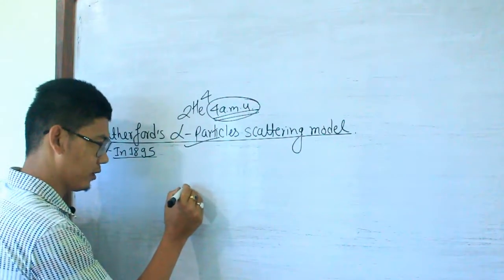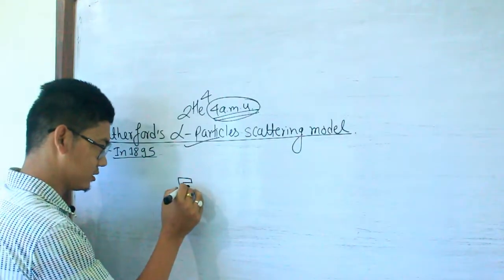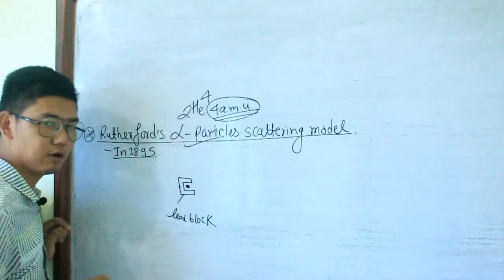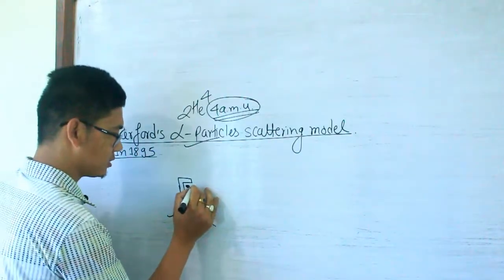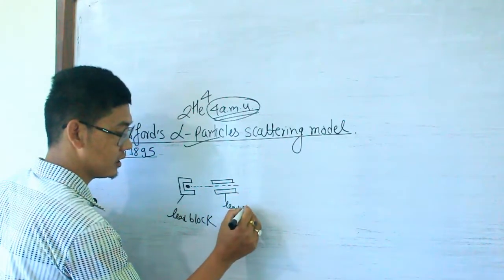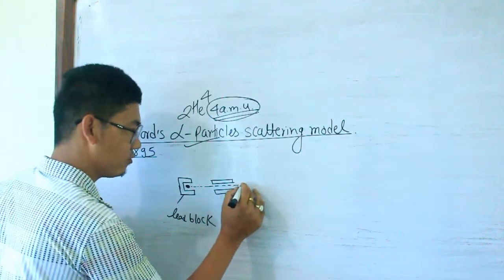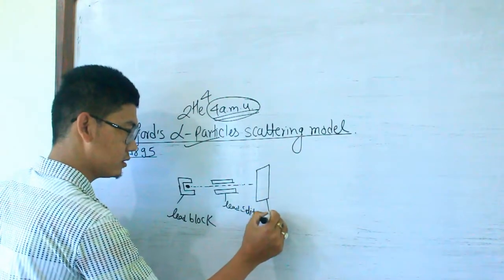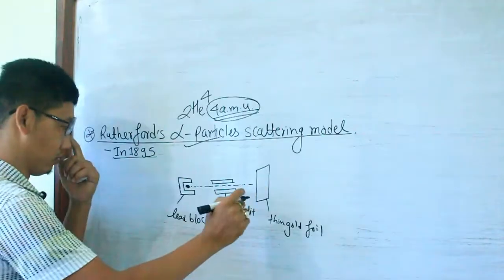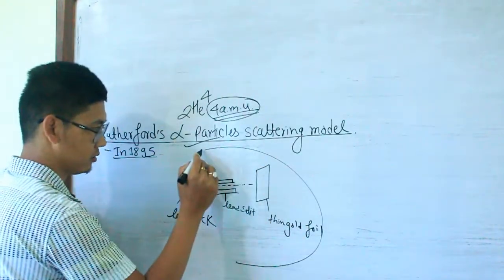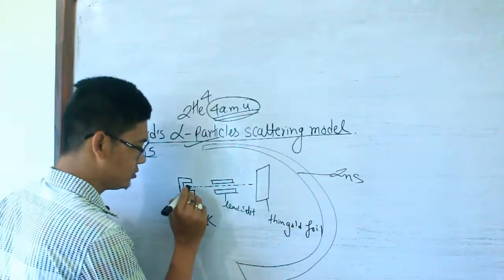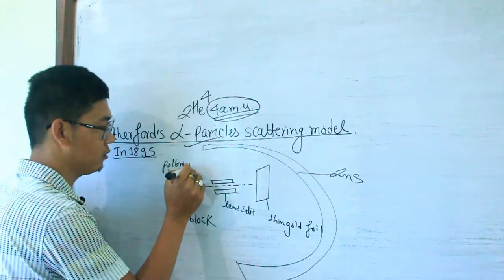In this model, Rutherford took a radioactive element which emits alpha rays. The alpha rays are blocked by lead, passing through a slit. The alpha rays then hit a thin gold foil. The setup is U-shaped, and around it is a screen called zinc sulfate. The alpha rays pass through the thin gold foil and hit the zinc sulfate screen.